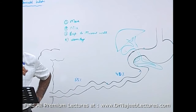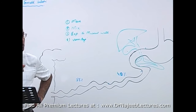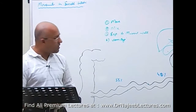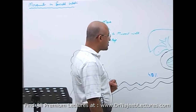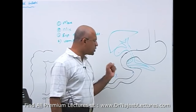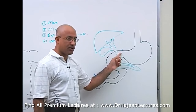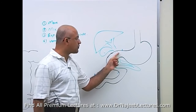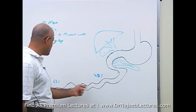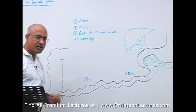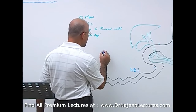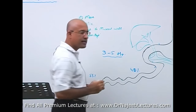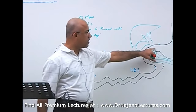The muscularis mucosa does not play any major role in mixing movement or peristaltic movement. It usually takes three to five hours for the contents of the small gut to move from the duodenum and jejunum up to the ileocecal valve.